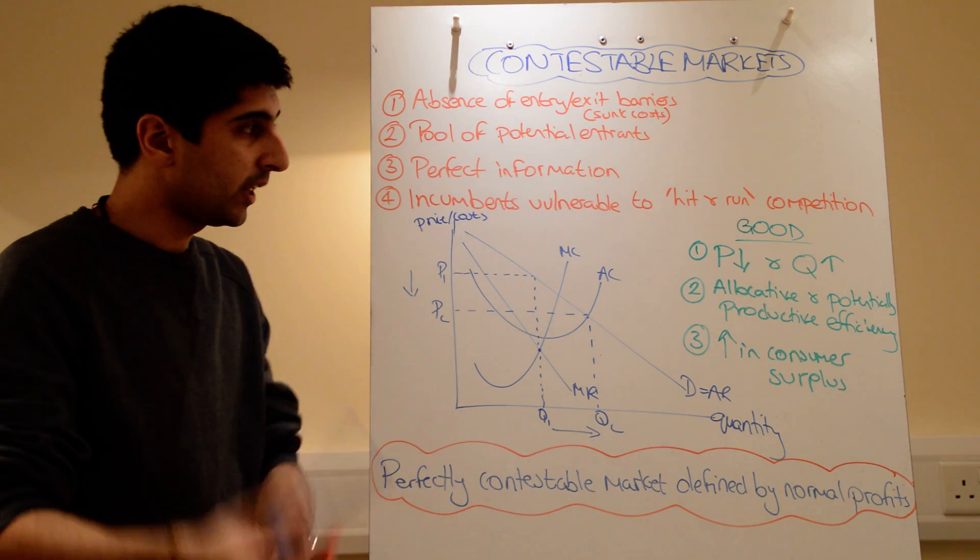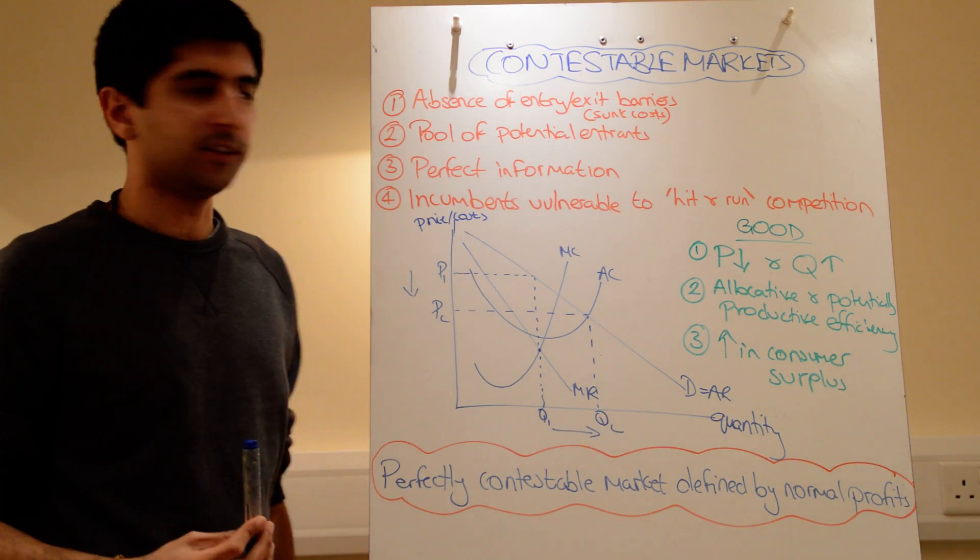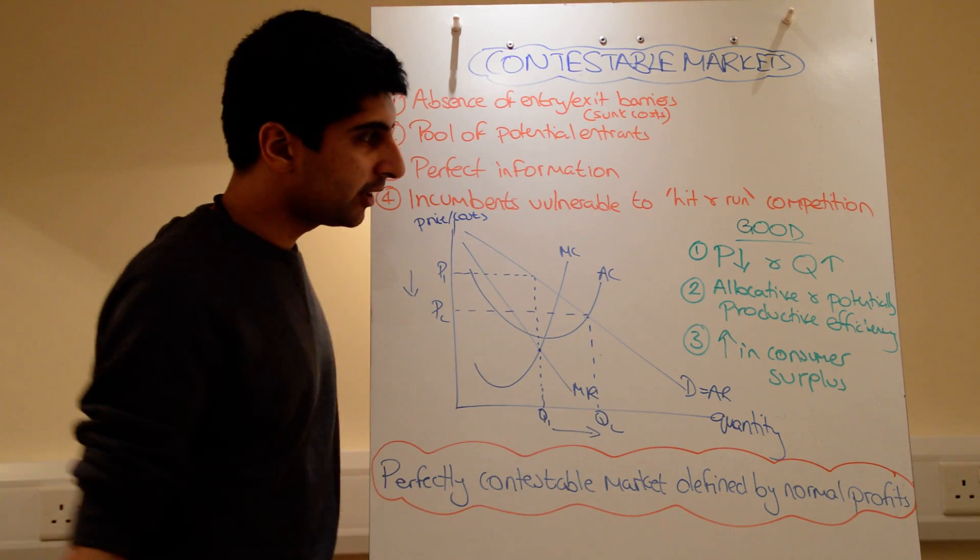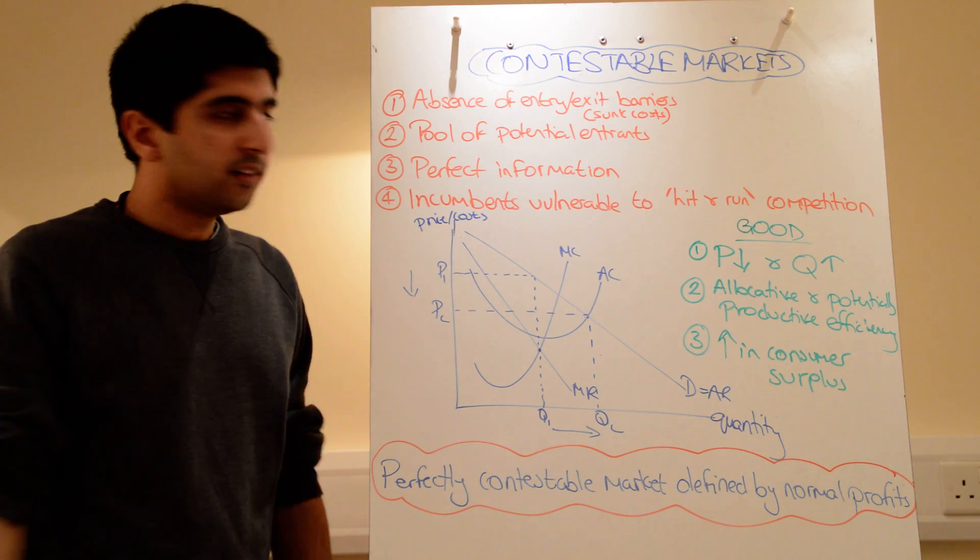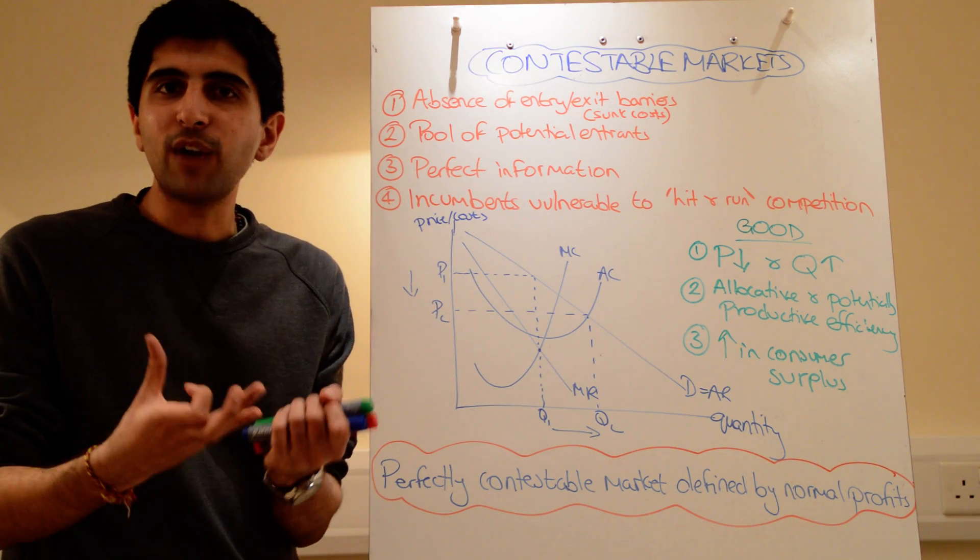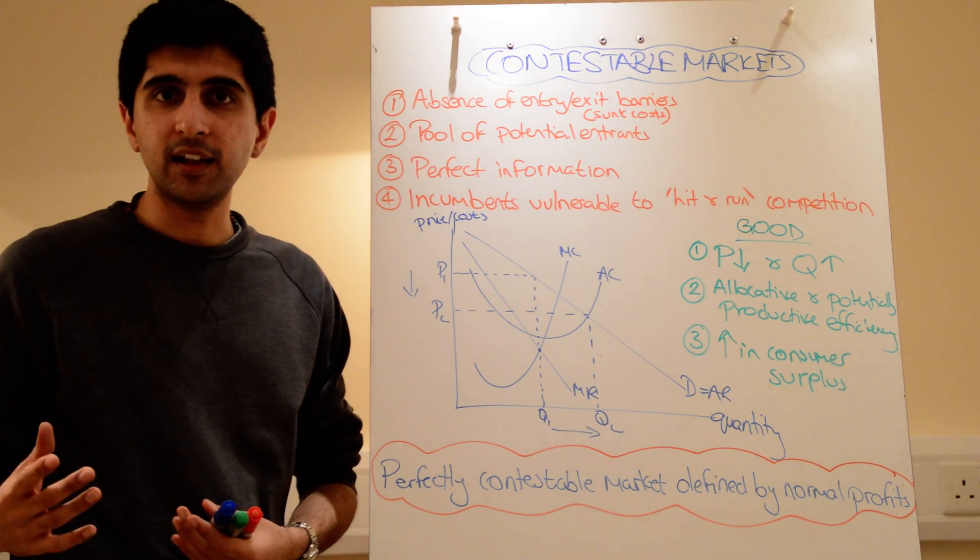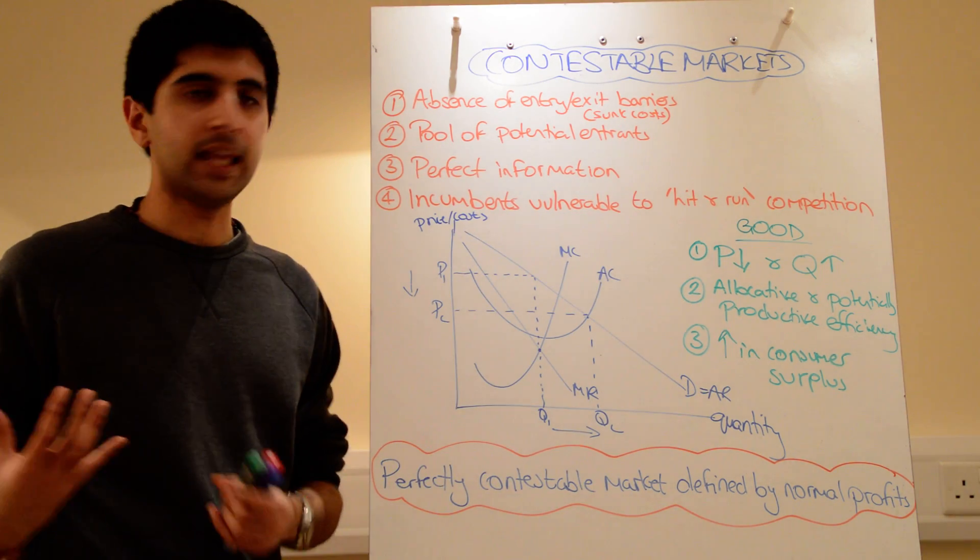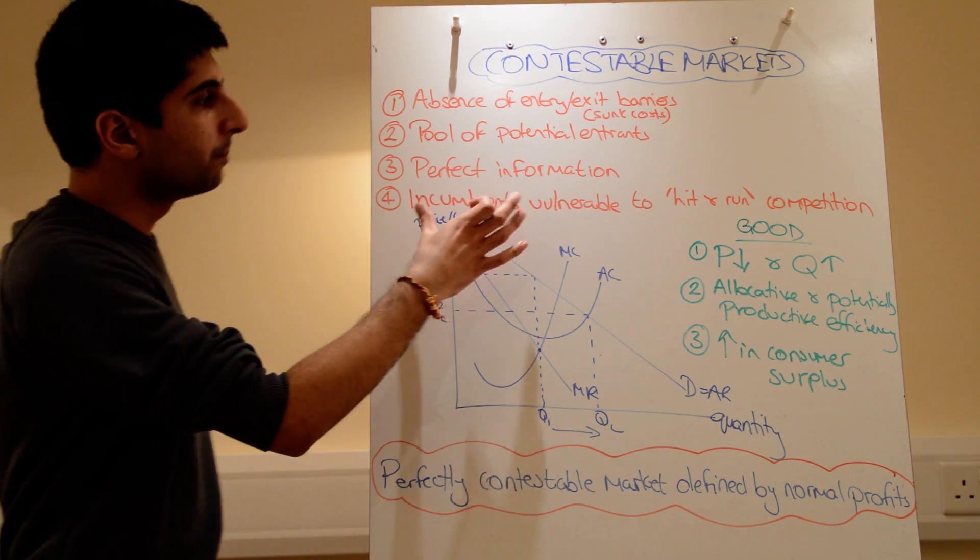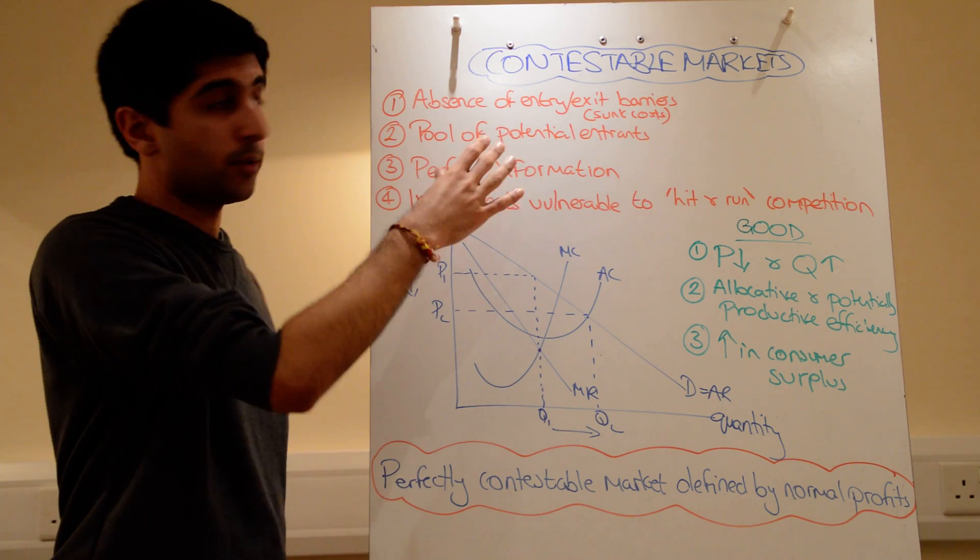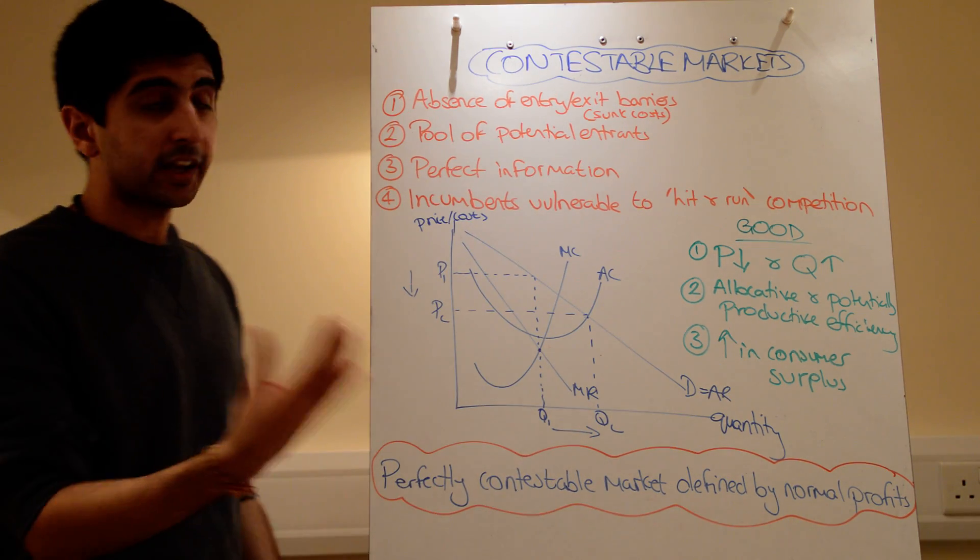And then these incumbents, these firms already in, are then vulnerable to what we call hit-and-run competition. Hit-and-run competition is very simply when new firms come in and they take or they grab some of the supernormal profits being made in the short run and then get out quickly. So hit-and-run because they just get in and get out very quickly. But in doing so, they grab some of these supernormal profits. So that's a characteristic of contestable markets. Because entry barriers are so low, that's potentially that could happen.